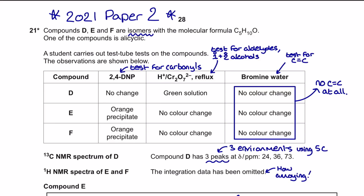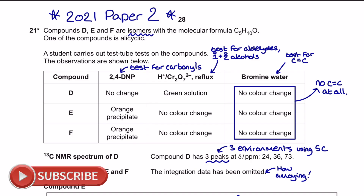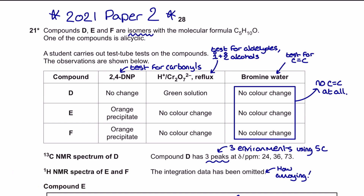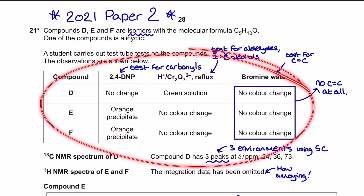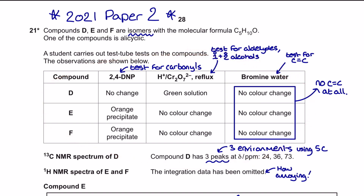We're back with another organic chemistry exam question from the 2021 paper 2 exam on the OCR A specification. It's a level of response question, so layout and a well-structured line of reasoning are going to be really important. For this particular question, we've got isomerism with three different structures called D, E, and F, which are all isomers of the molecular formula C5H10O. One of them is alicyclic, and unlike a lot of spectroscopy questions, we haven't been given percentage composition by mass or mass spectrum information. Instead, we've got an amazing table of different qualitative functional group tests for organic chemistry.